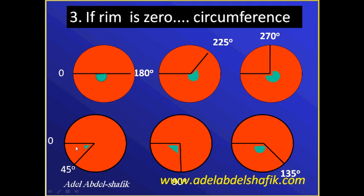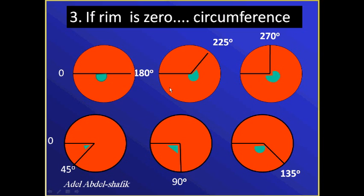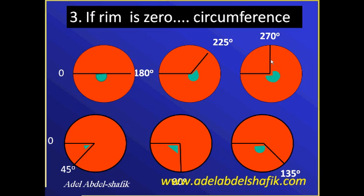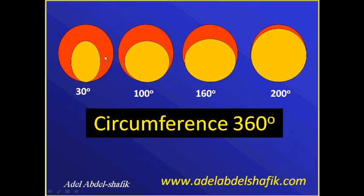Now if the neural rim is zero — meaning the area of zero — and it occupies less than 45 degrees of the circumference, this is one stage. If it's more than 45 but less than 90 degrees, that's another stage. More than 90 but less than 135, more advanced. Then more than 135 but less than 180, and so on. So the key point is: how many degrees of the 360-degree circumference does the zero area occupy? The wider the area, the more advanced the stage. For example, a zero area in 30 degrees, then 100 degrees, then 160 degrees of the circumference.